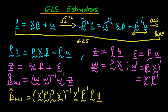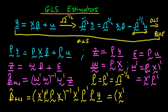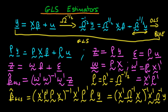Finally, substituting in the explicit form for P and P′, noting that P = P′ = Ω^(-1/2), we get that P′P = P² = Ω^(-1). Therefore β̂_GLS = (X′Ω^(-1)X)^(-1) X′Ω^(-1)y. This is the explicit form of the GLS estimator — it involves the inverse of the variance-covariance matrix, and in the presence of heteroscedasticity it allows us to obtain BLUE estimates of the parameters.